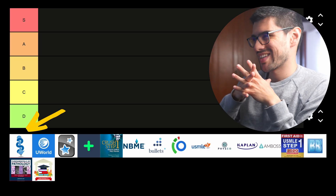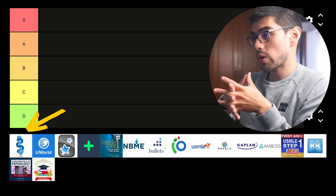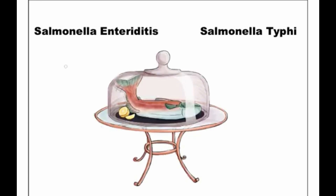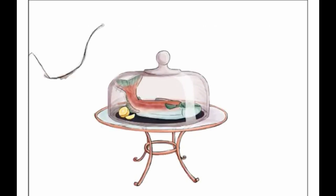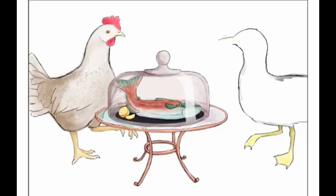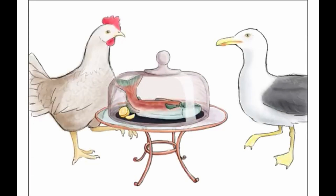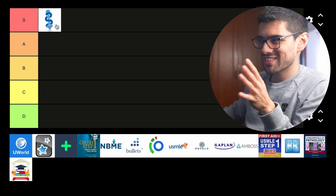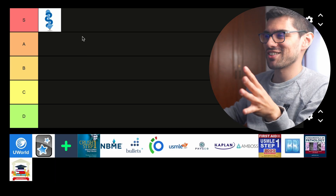Let's start with the first one: Sketchy. I love the idea of Sketchy — using visual retrieval cues to help you memorize difficult topics. It's a great idea, and according to research, it's a far superior method for memorization compared to rote memorization. So that by itself would kind of give Sketchy an S tier.